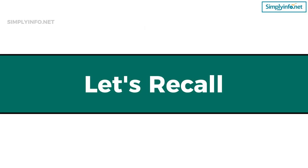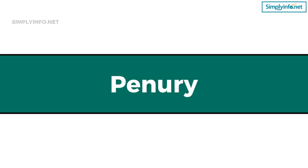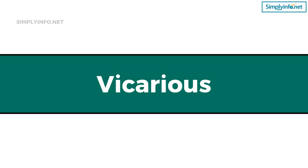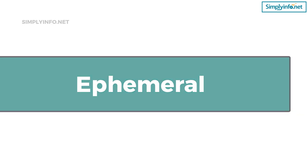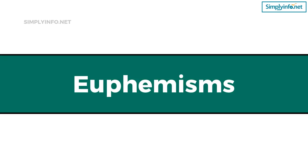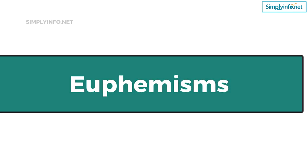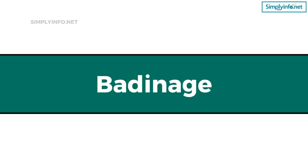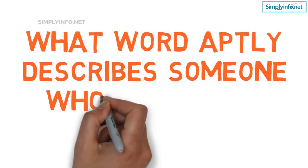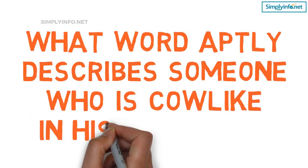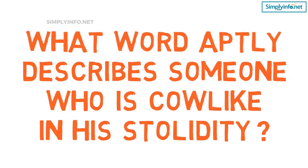Before we move on, let us recall what we have discussed so far: Penury, Vicarious, Ephemeral, Euphemisms, and Badinage. What word aptly describes someone who is cow-like in his stolidity?